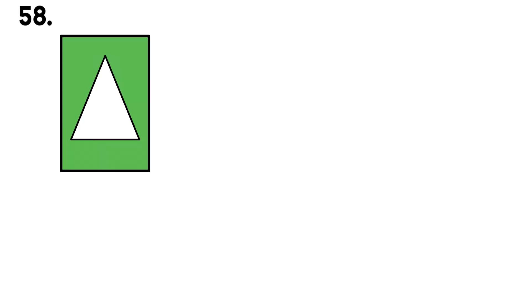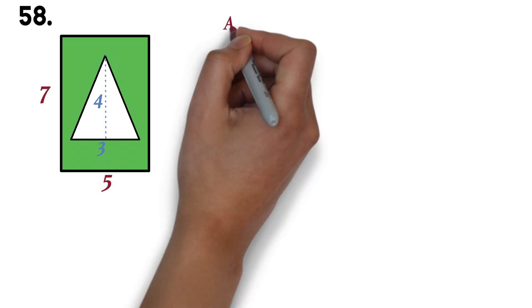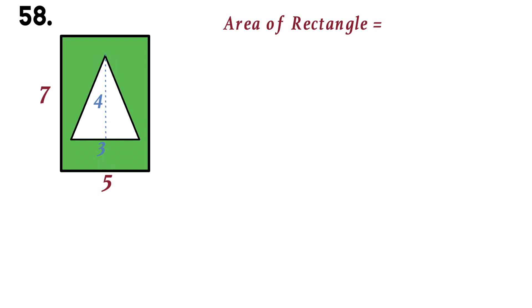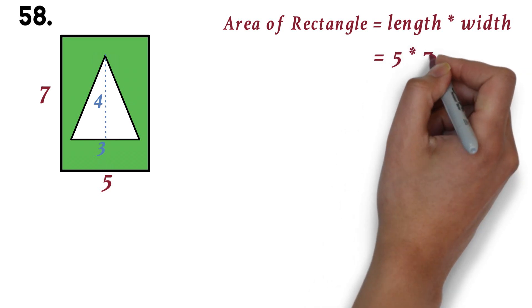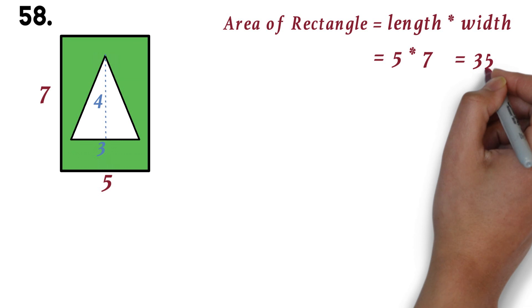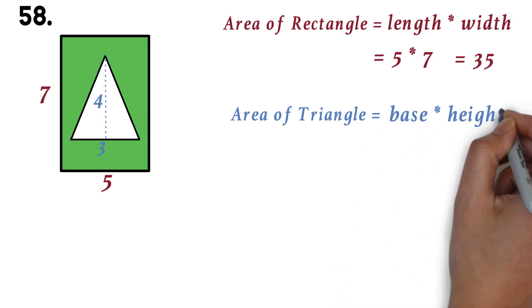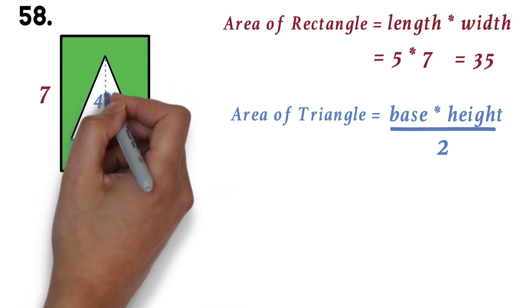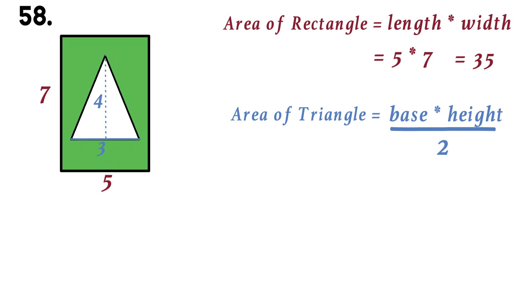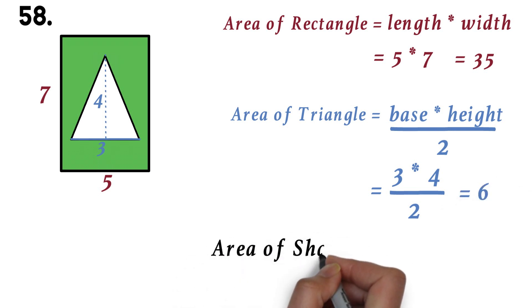Question 58. Here, we are supposed to find the area of the green shaded portion. Questions like this is also very common. The work here is to find the areas of the two shapes and subtract it. We start by finding the area of the rectangle. This is the length times the width. So we will have 5 times 7, which is 35. Next, we find the area of the triangle. We know that it's base times the height over 2. The base is 3 and the height is 4. We have 3 times 4 divided by 2. This will give us 6. So the area of the shaded portion will be 35 minus 6. This will be 29.